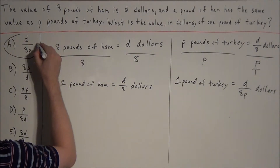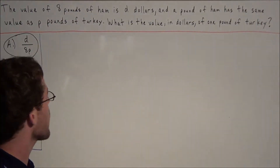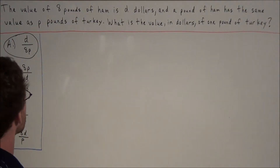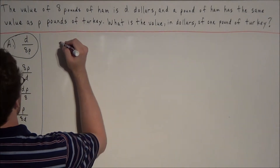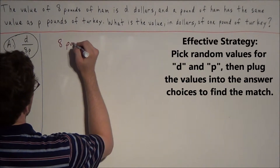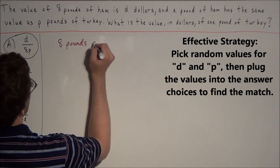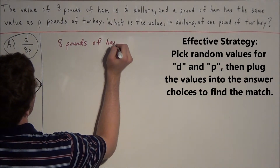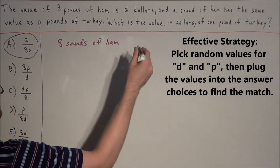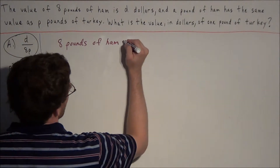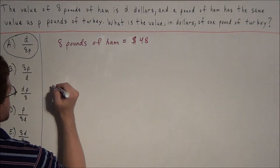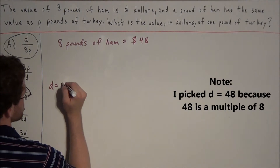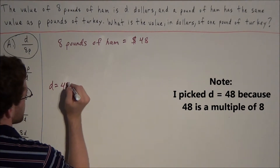Now the second solution — we want to pick random values to fit the problem. Starting with 8 pounds of ham costing d dollars, let's say 8 pounds of ham costs 48 dollars. That means we're setting d equal to 48.